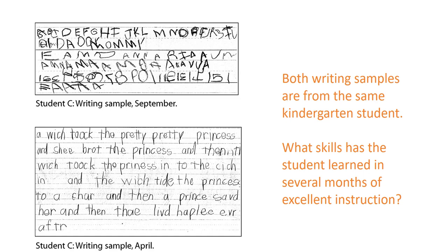First, take a look at these two different writing samples. Both were written by the same child — a kindergarten student. The top sample was written in September, at the beginning of the year. If you look at what she's got going on, we can see some things she has learned: she's trying to form capital letters, she has a little understanding of the alphabet, she's learned how to write a couple of words — we see daddy and mama in there. And we can see her name — do you see the name Anna in there? So this is Anna.